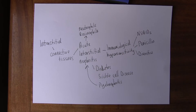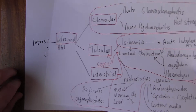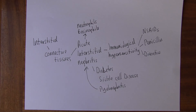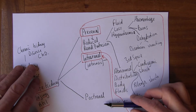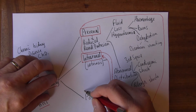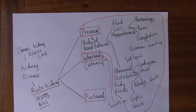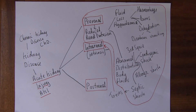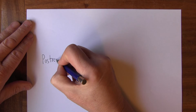So that finishes off that section — the intrarenal: the glomerular, the tubular, and the interstitial. Now that only leaves us the final component, which is the post-renal causes of acute kidney injury. Post-renal causes are those developing after the urine has left the kidneys.